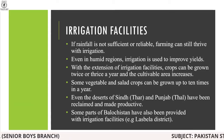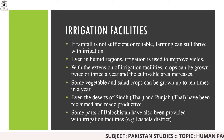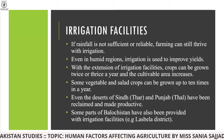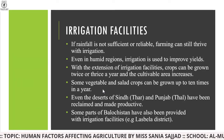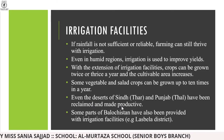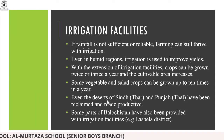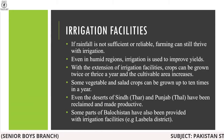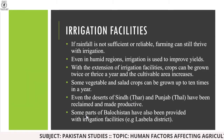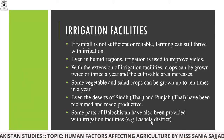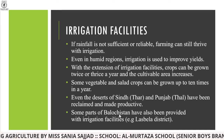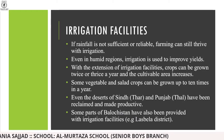Some vegetables and salad crops can be grown up to 10 times in a year if the weather meets the requirement. Even the deserts of Sindh and Punjab have been reclaimed and made productive. Some parts of Balochistan have also been provided with irrigation facilities — for example, Las Bela District — so Balochistan is also moving towards productivity and progress.